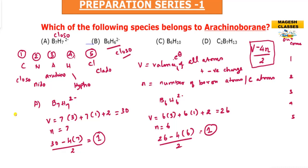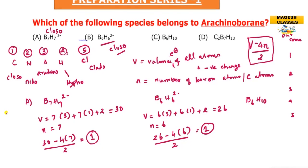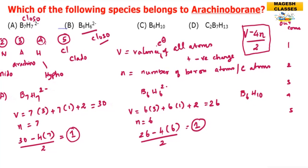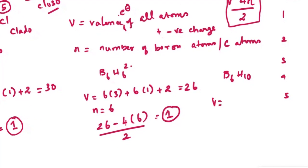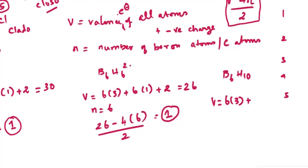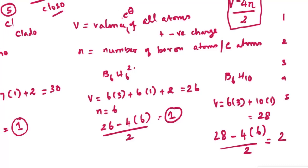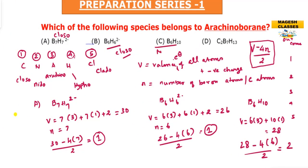Then B6H10. This is a common method to find out the type of borane or carborane. What is V? V equals 6 times 3 plus 10 times 1, so total value is 28. Substituting: 28 minus 4 times 6, divided by 2. You get 28 minus 24, which is 4, divided by 2. It equals 2. Output value 2 means nido type.